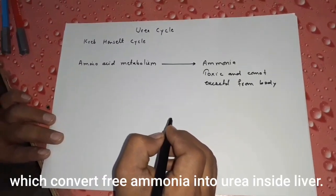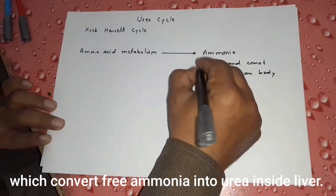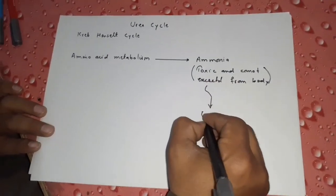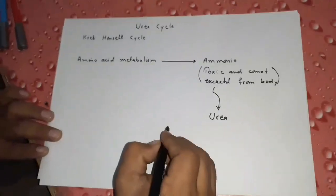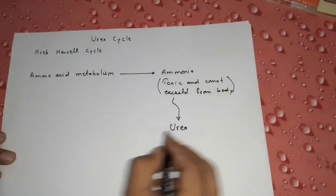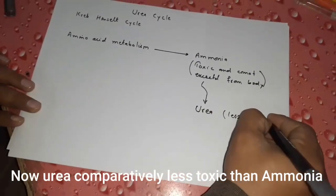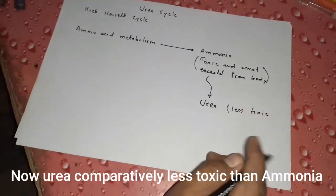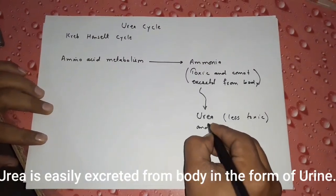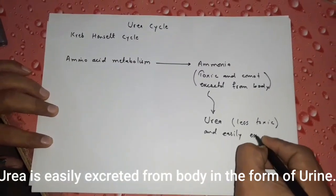The urea cycle is a biochemical pathway in the body which converts free ammonia into urea. This urea cycle takes place in the liver, and urea is less toxic and easily excreted from the body.